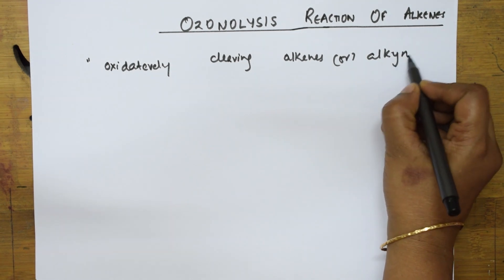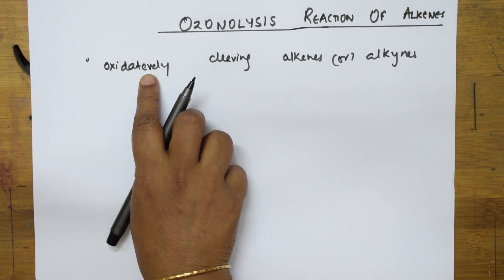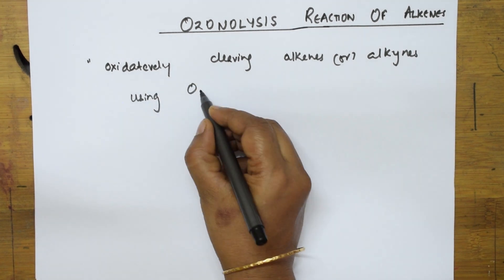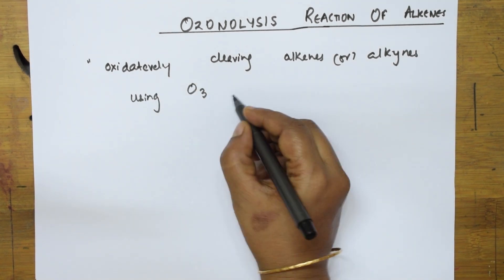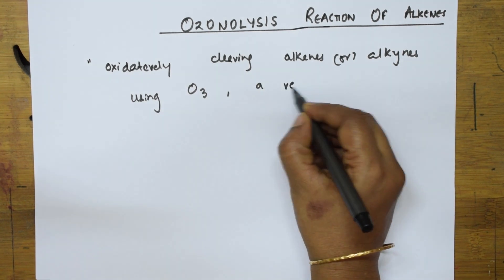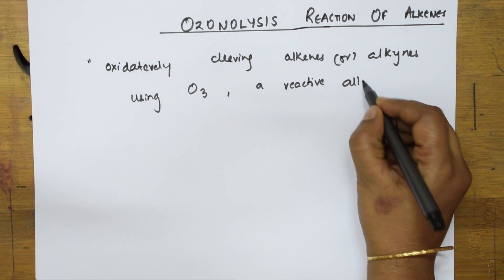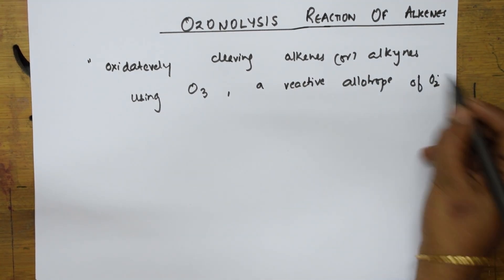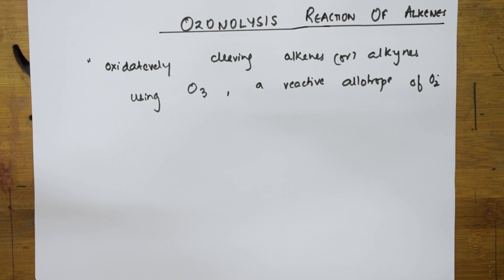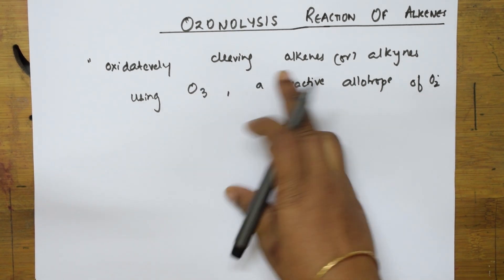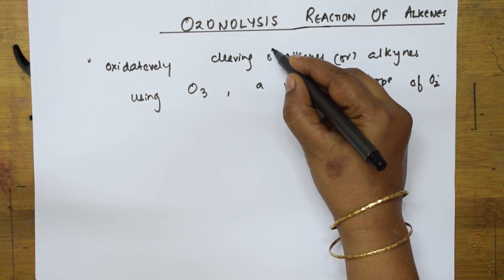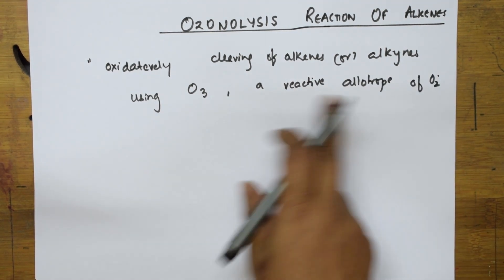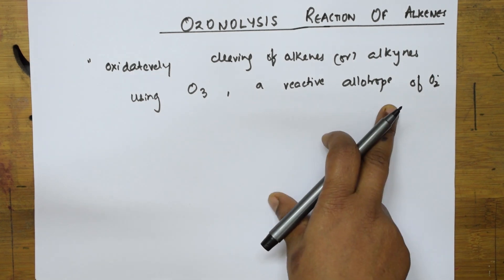It is oxidatively cleaving alkynes. What am I cleaving with? I am going to use O3. Ozone molecule is O3 — it is a reactive allotrope of oxygen. So ozonolysis is a process of oxidatively cleaving alkenes or alkynes using ozone, which is an allotrope of oxygen.